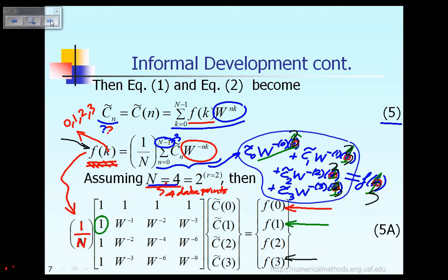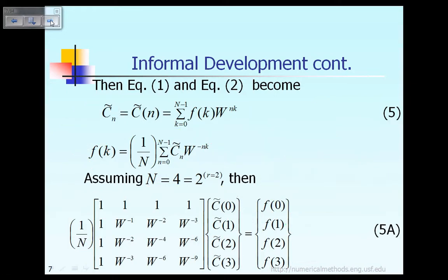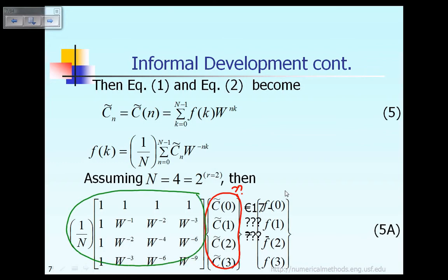In equation 5A, what we want to solve is C-tilde. The unknown is this vector C-tilde. To solve for the unknown vector C-tilde in equation 5A, you need to take the inverse of the coefficient matrix and then multiply it with the right-hand side vector F. That is exactly shown on the next slide.